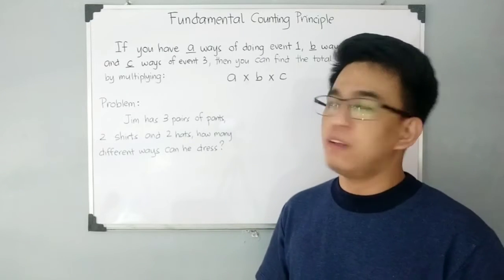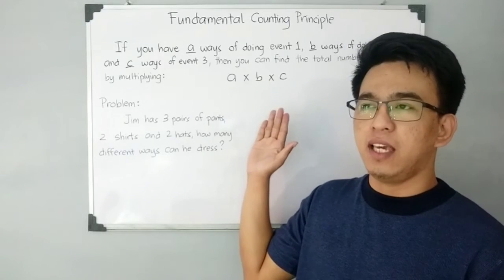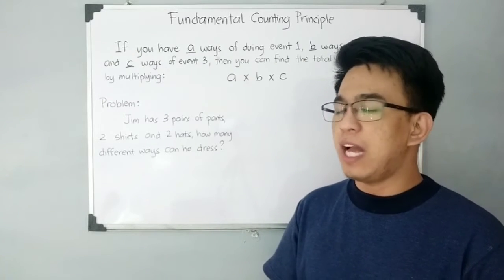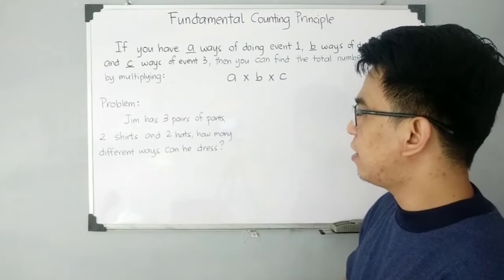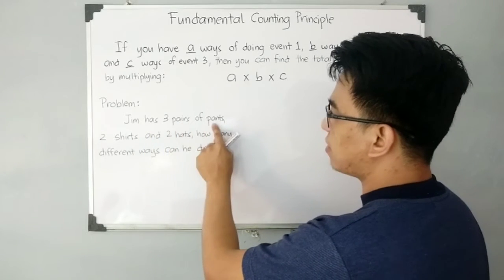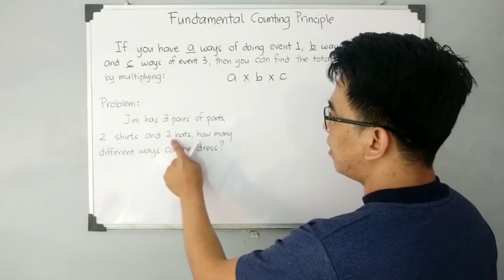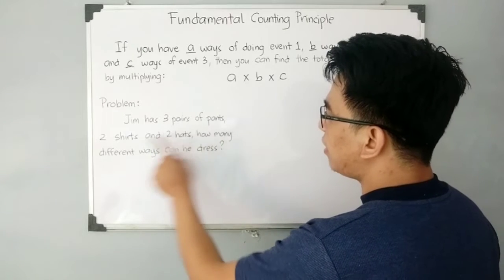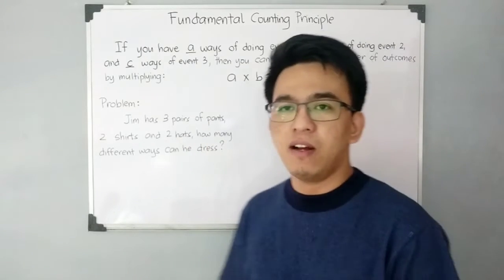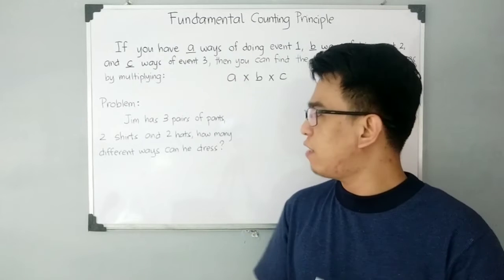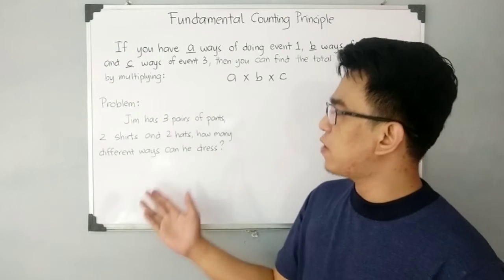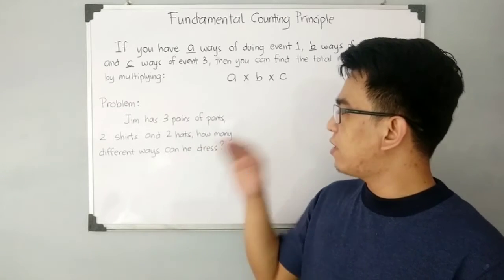Before we start using this formula, we have here the first problem where I will show you a tree diagram that can help us in solving it. Jim has three pairs of pants, two shirts, and three hats. How many different ways can he dress? The question is how do we find the number of ways Jim can dress using these three pairs of pants, two shirts, and two hats?